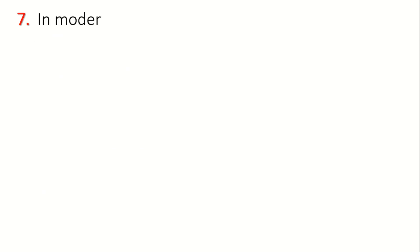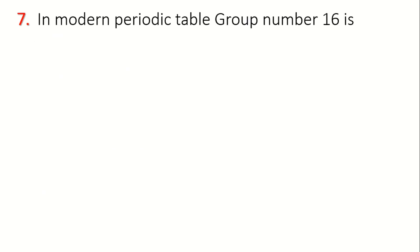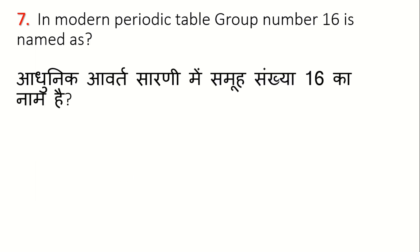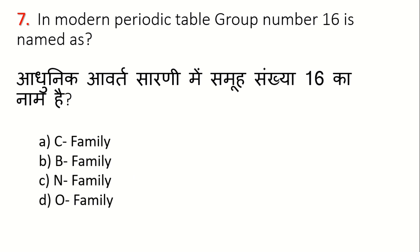Let's see the next question. In the modern periodic table, group number 16 is named as — Options are: A. Carbon Family, B. B Family, C. N Family, D. O Family. The correct answer is Option D: O Family, or the Oxygen Family. In the modern periodic table, group 16 has five elements: oxygen, sulfur, selenium, tellurium, and polonium.